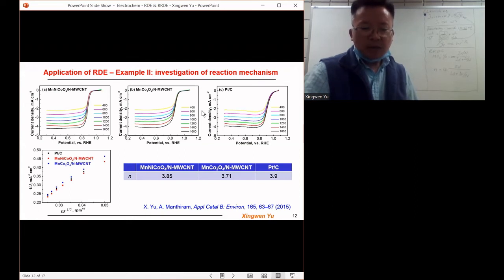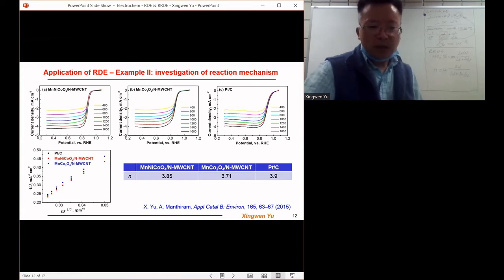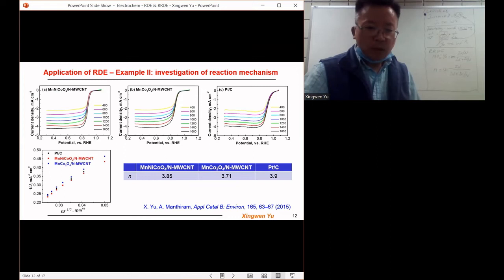And with the limiting current we obtained from these plots, we plot one over j versus one over square root of the rotating speed, and we plot three straight lines here. From the slope of these three straight lines we are able to calculate the number n.